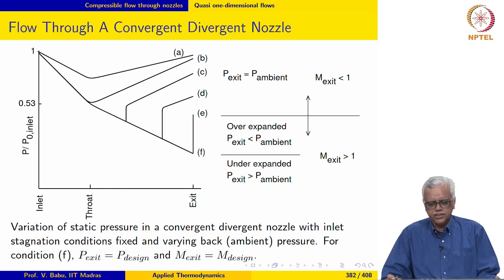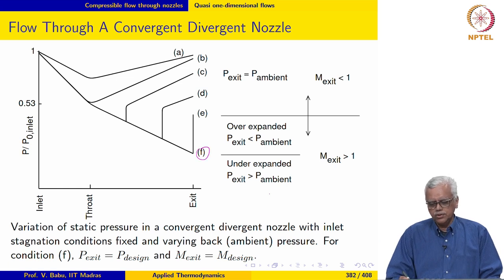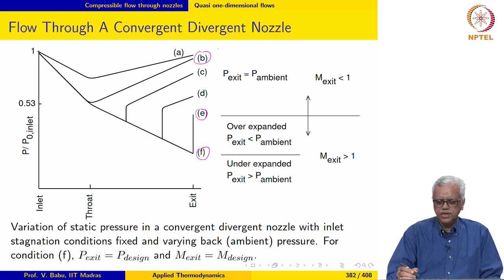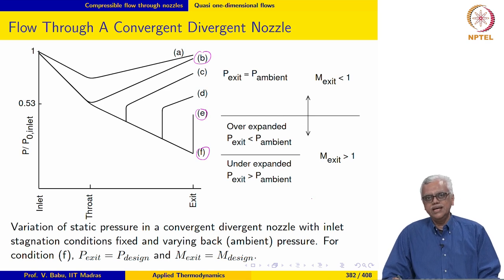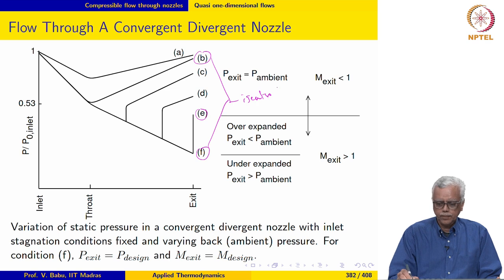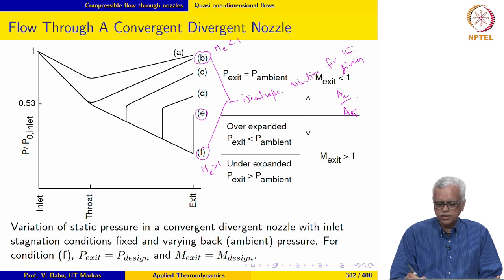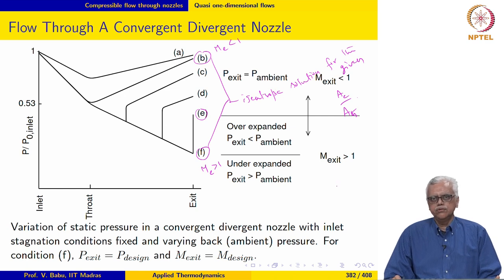We are given the inlet stagnation conditions. In the analysis of such problems, what we would typically do is determine the exit pressure corresponding to solution F, solution E, and solution B. Once we do this, we can determine where the given exit condition lies and proceed accordingly. Note that solutions B and F are actually isentropic solutions for the given area ratio. Solution B corresponds to the subsonic solution with M_exit less than 1, and solution F corresponds to the supersonic solution with M_exit greater than 1, but same area ratio isentropic solution.